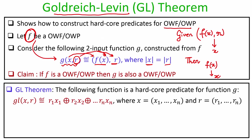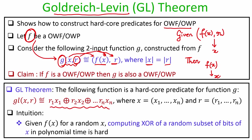The Goldreich-Levin theorem states that the hardcore bit associated with this function g is the inner product: XOR of a random subset of bits of x, i.e., ⟨x, r⟩ mod 2. Even given f(x) and r but not x, computing this linear combination of bits of x better than probability half in polynomial time is not possible. This is what the theorem proves.